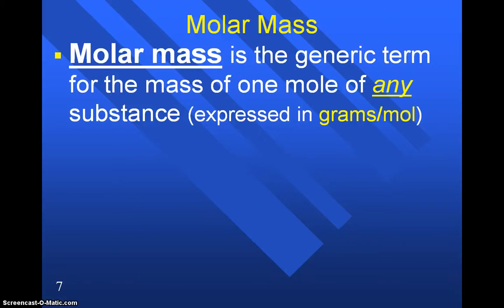So in a lab, we actually don't have the ability to count the number of pieces of things, but we do have the ability to weigh a sample of some substance. So we use the idea of molar mass in order to convert between amount of things that you have and the mass of the substance that you have. Molar mass is the generic term for the mass of one mole of any substance, and the unit for molar mass is grams over moles, or grams divided by moles.